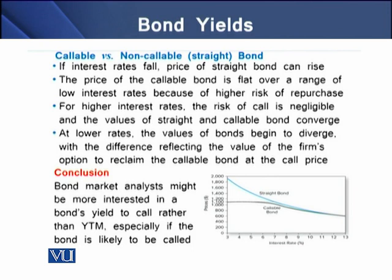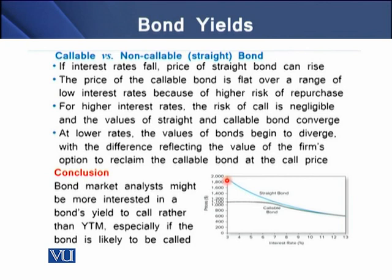The price of a callable bond is flat over a range of low interest rates because of the higher risk of repurchase. For straight bonds with falling interest rates, the price rises — in the picture the interest rates fall from 13% toward 3% and the price rises from 200 to 2,000. The price of a callable bond is flat at lower interest rates because the issuer may find it suitable to repurchase the bond from the bondholder.